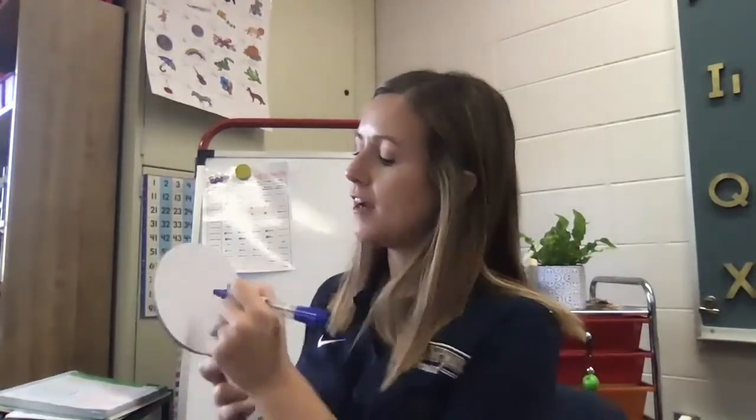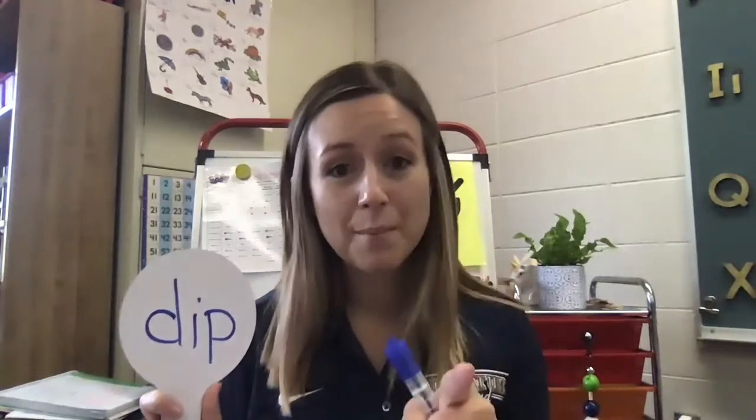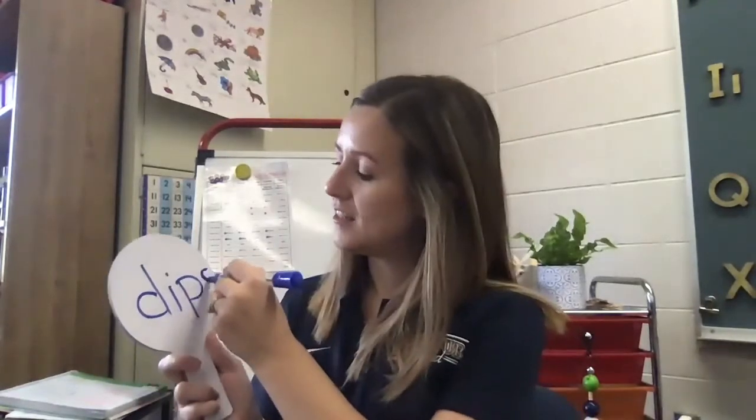Sometimes when you're talking about something that somebody else does, you can add the letter S at the end. For example, if I was talking about myself, I could say I dip my feet into the water. But if I was talking about somebody else, I might say that Kylie dips her feet into the water. So the word changes when I talk about somebody else.